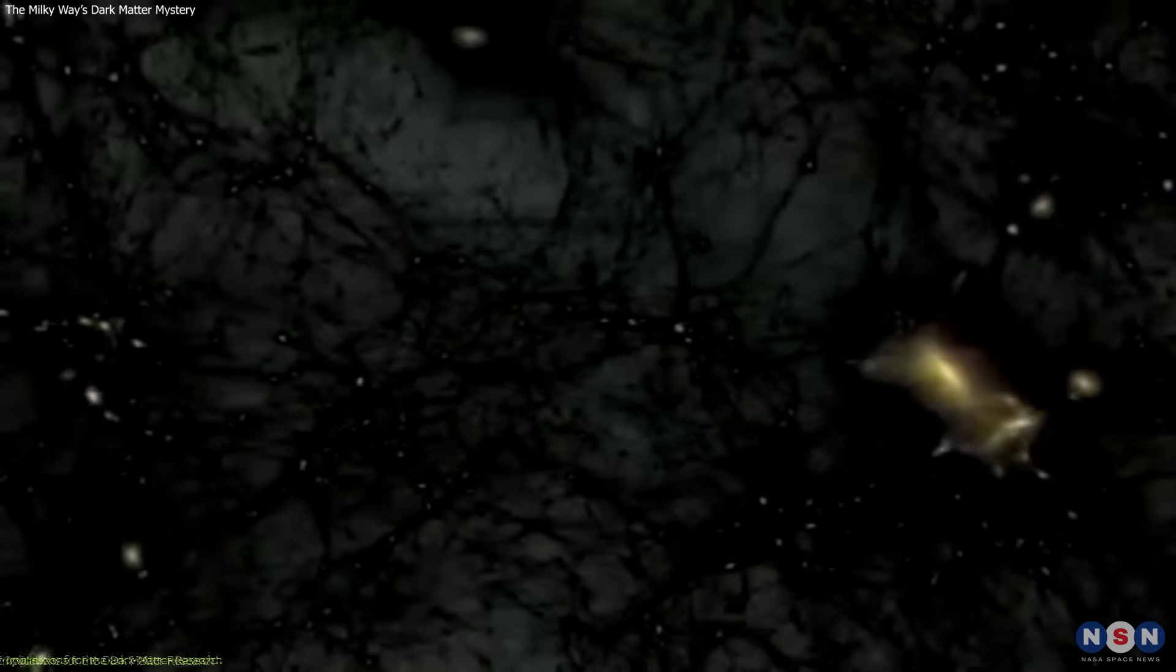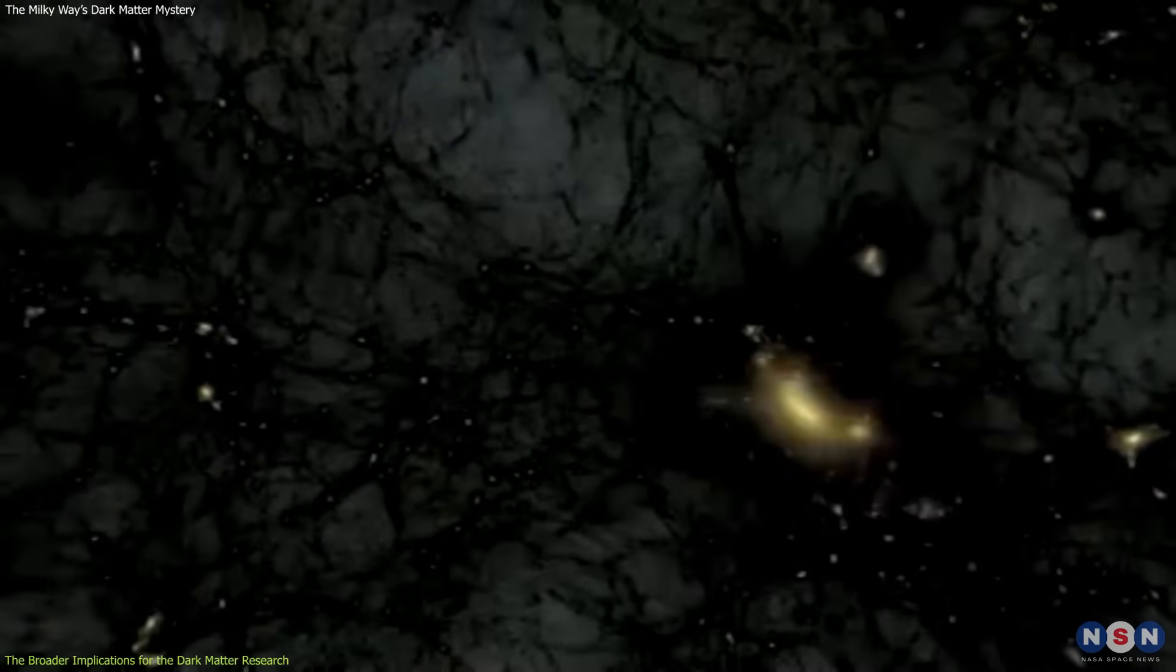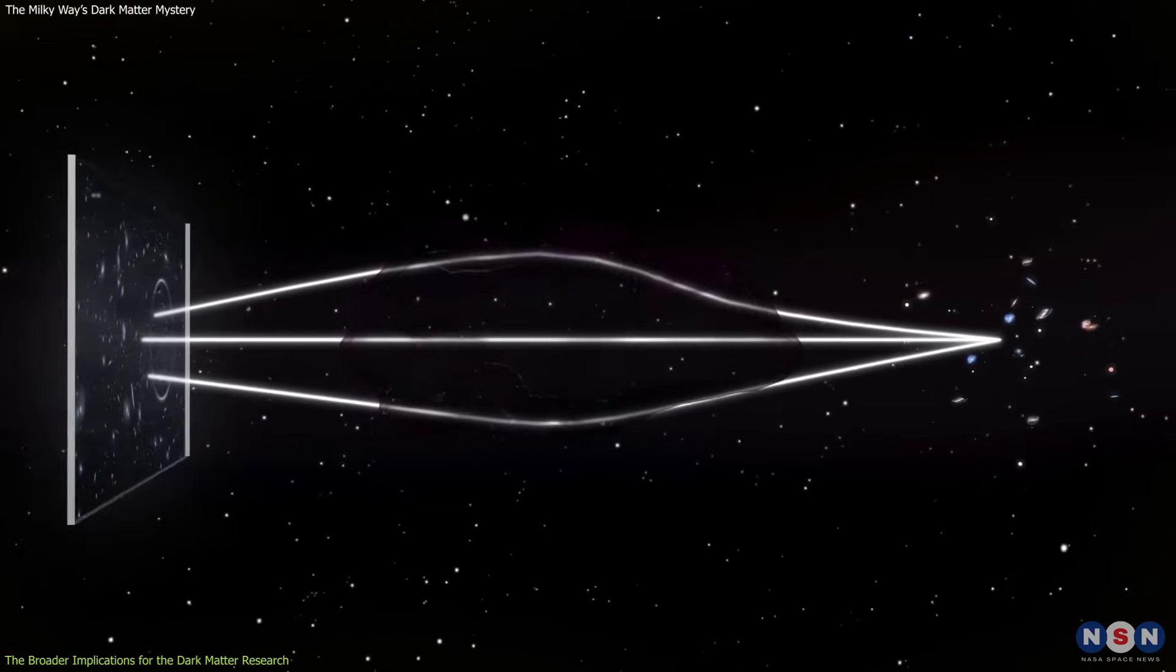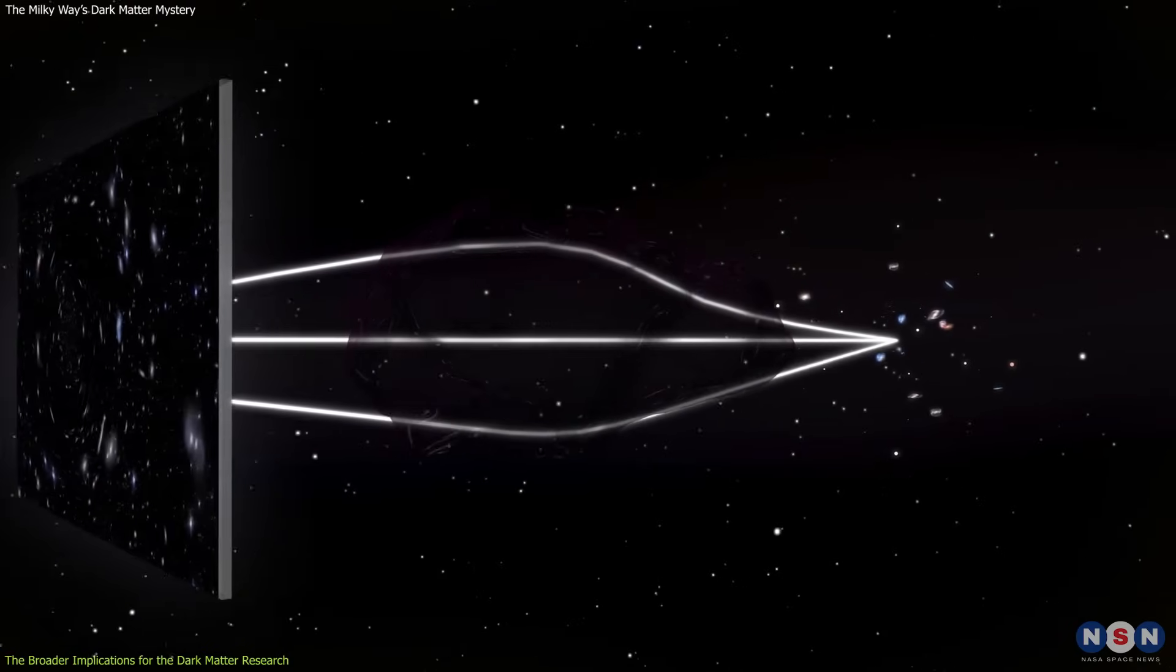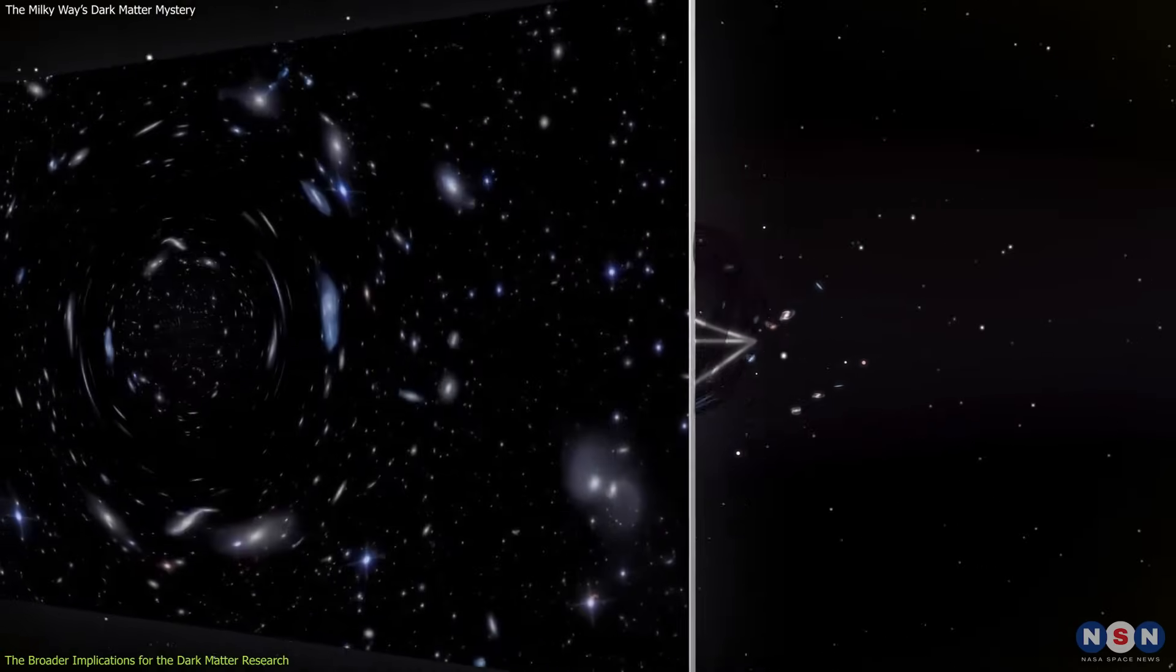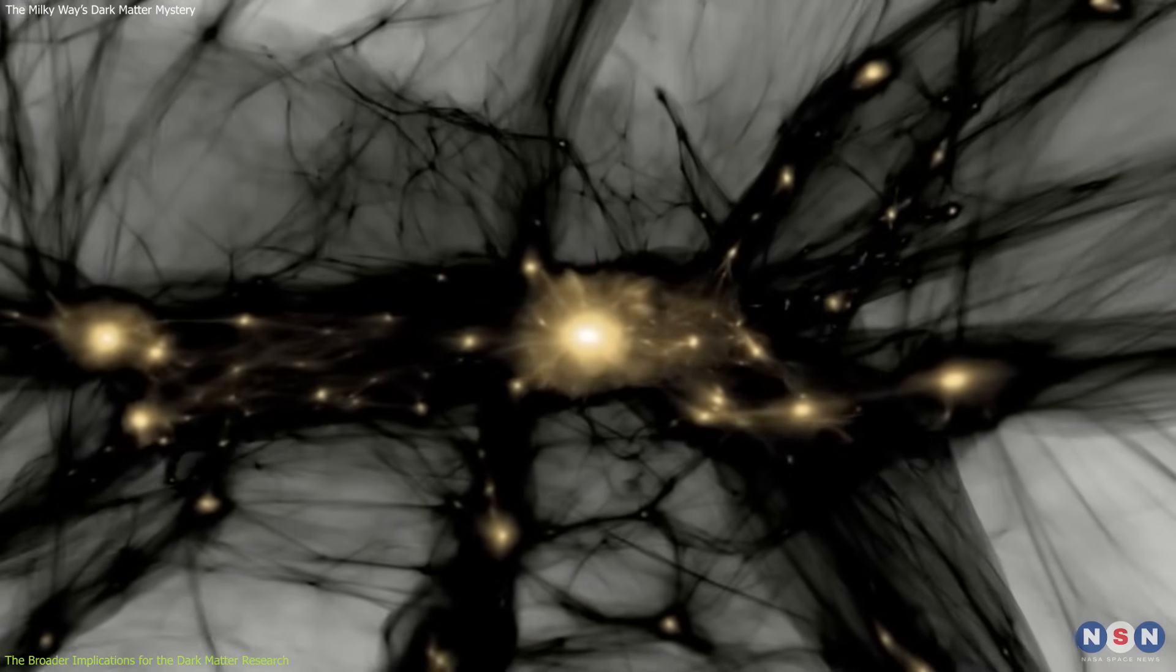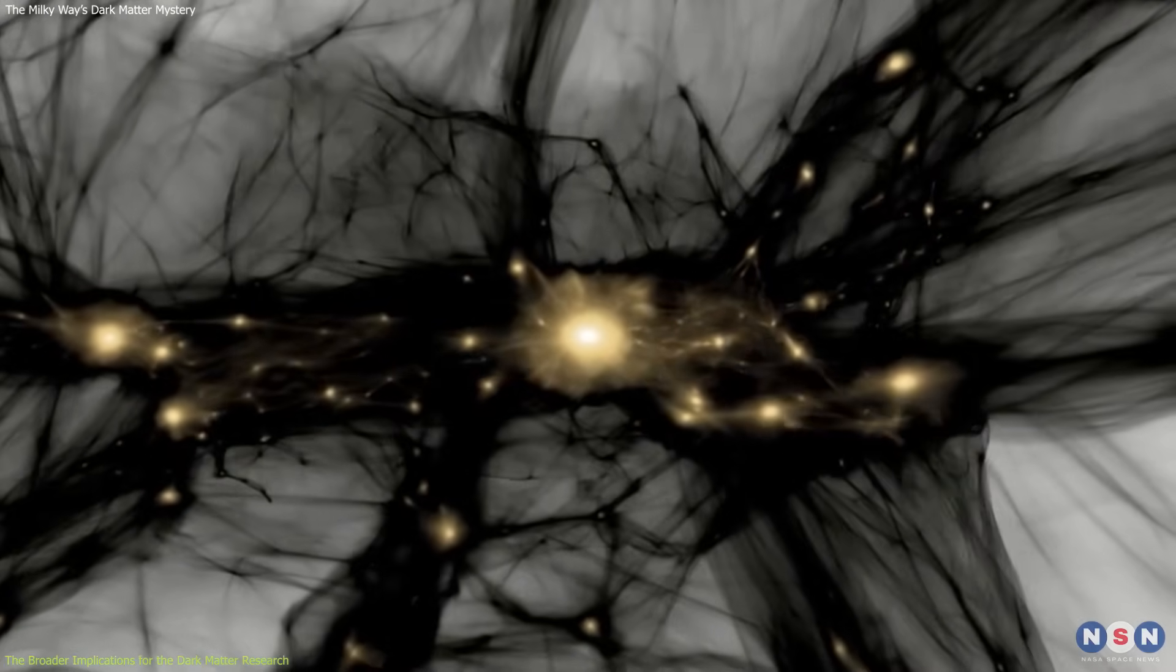Dark matter is one of the biggest puzzles in science, because it is the dominant form of matter in the universe, but it has not been directly detected yet. We only know that it exists because of its gravitational effects on visible matter, such as stars and galaxies, but we do not know what it is made of, how it behaves, or where it comes from.